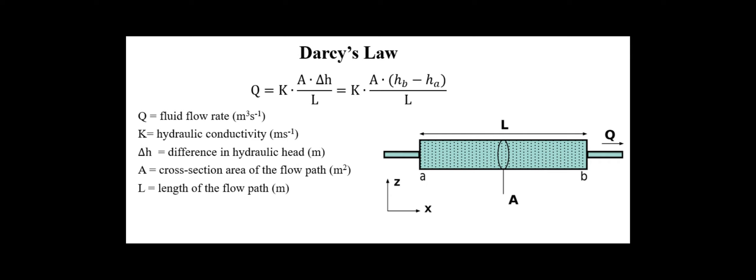Another principle is Darcy's law. The equation looks complicated, but essentially says flow rate is directly proportional to the cross-sectional area of flow, pressure difference, and permeability of the soil, and is inversely proportional to the length of flow.